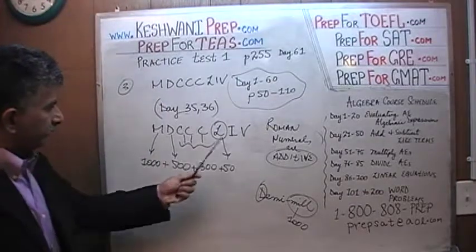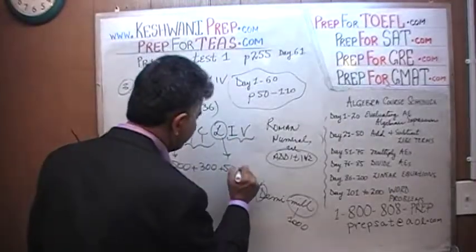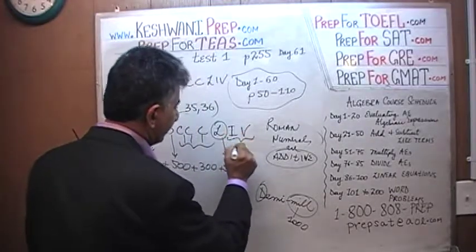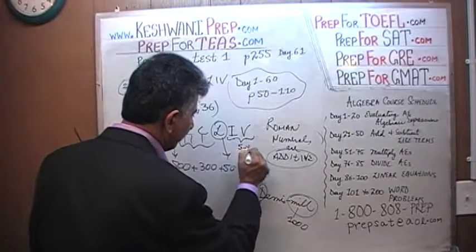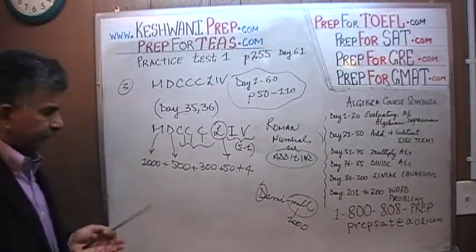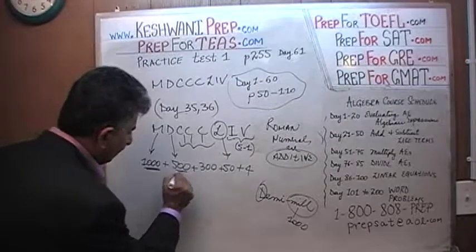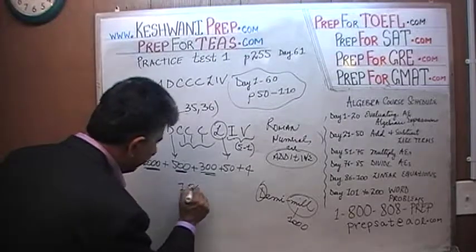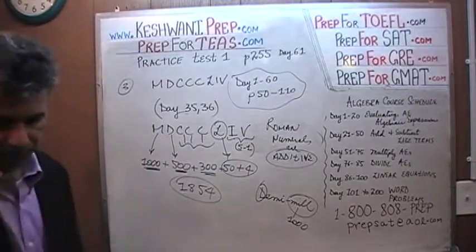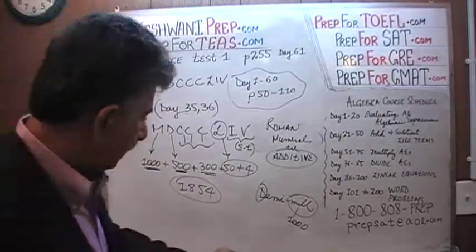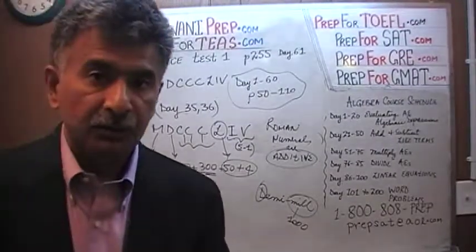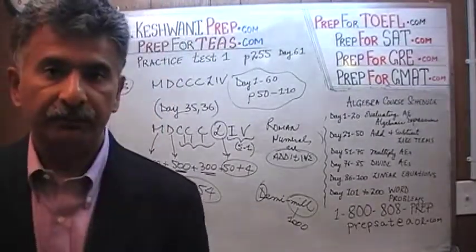So we have I and V, which is just four — five minus one. That's your four. So: 1500 and 300 is 1800, and then 54. The answer is 1854. That's all there is to it. I will see you tomorrow where we will continue our journey on problems 4 and 5. Bye now.